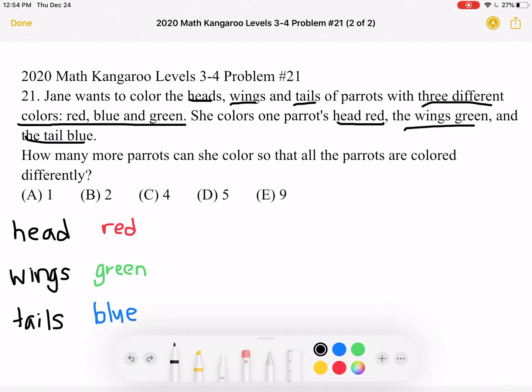So now let's fix one of the colors and manipulate the other two, and that will make it easier for us to count. So in this case, let's fix the head.